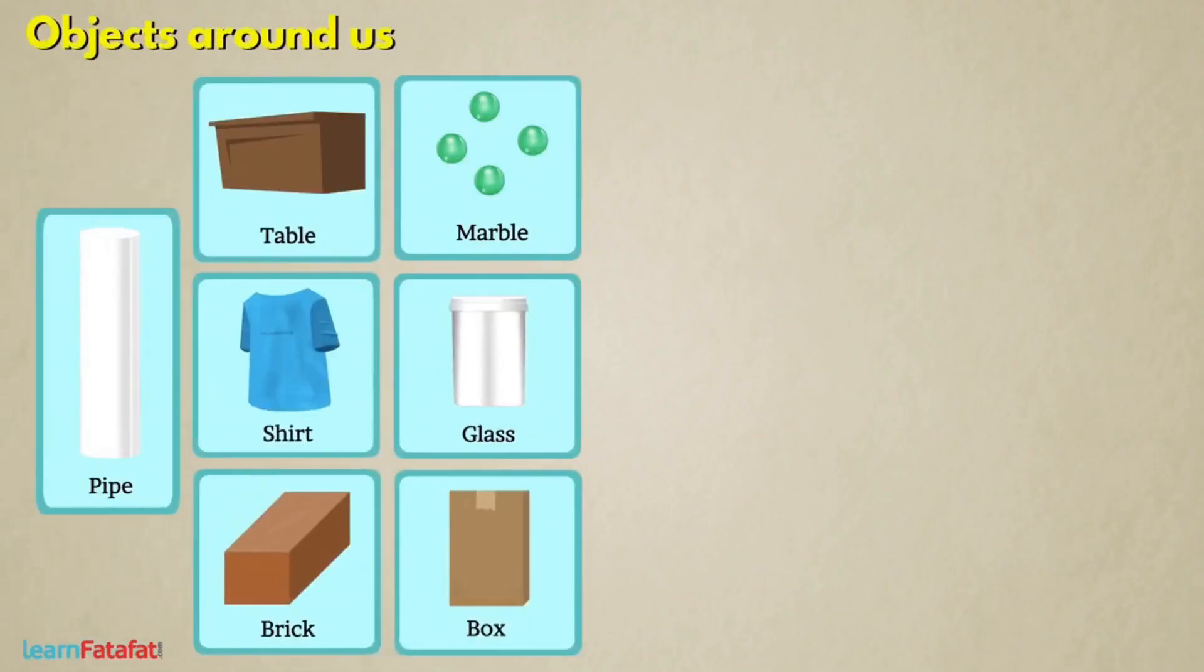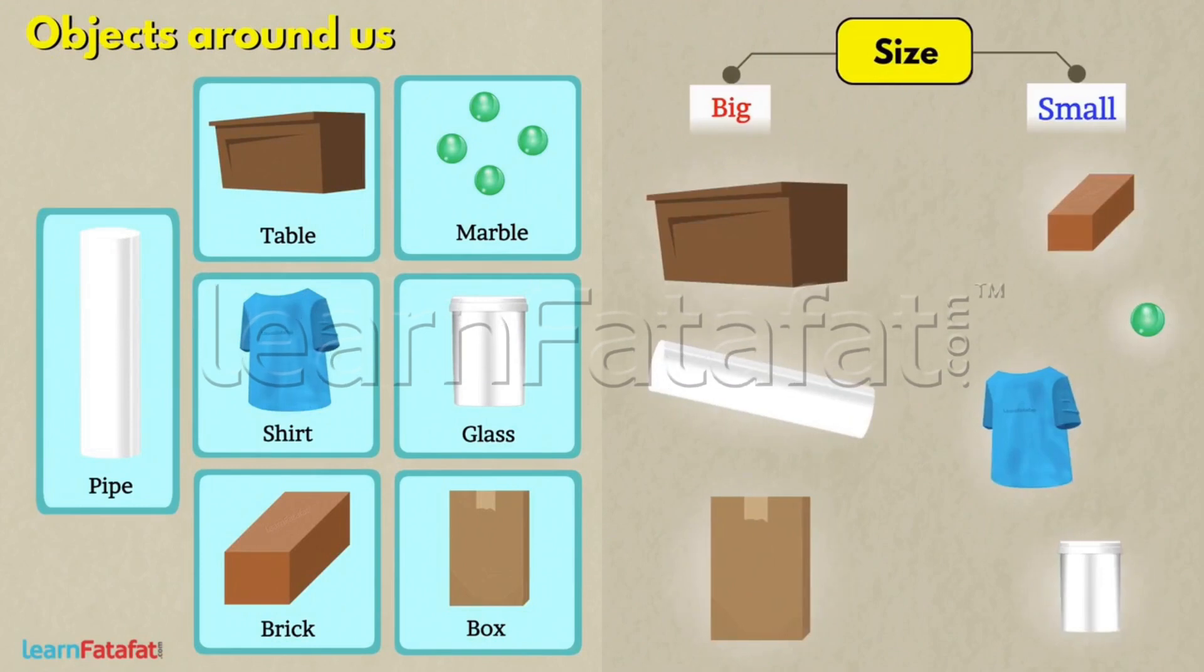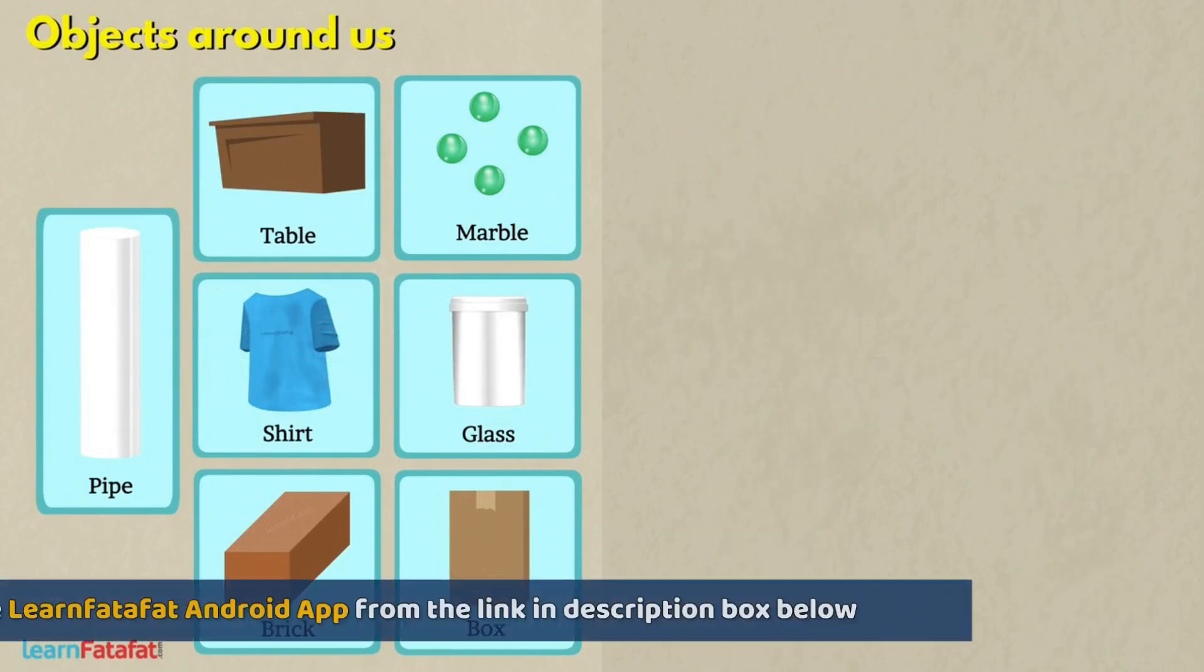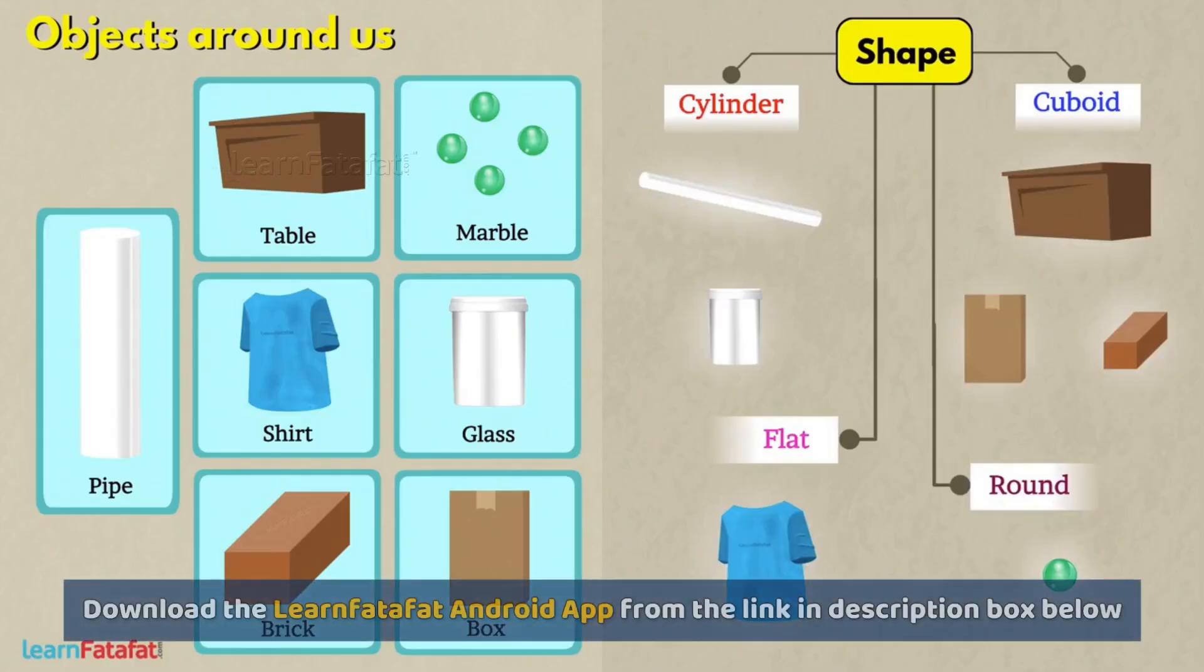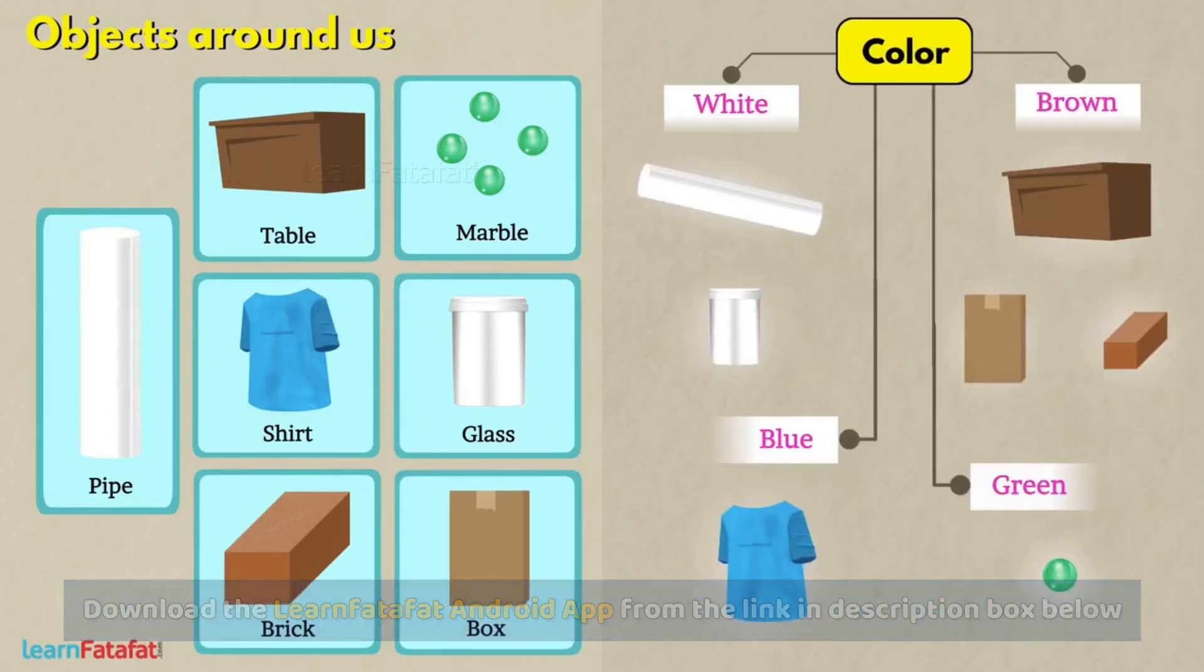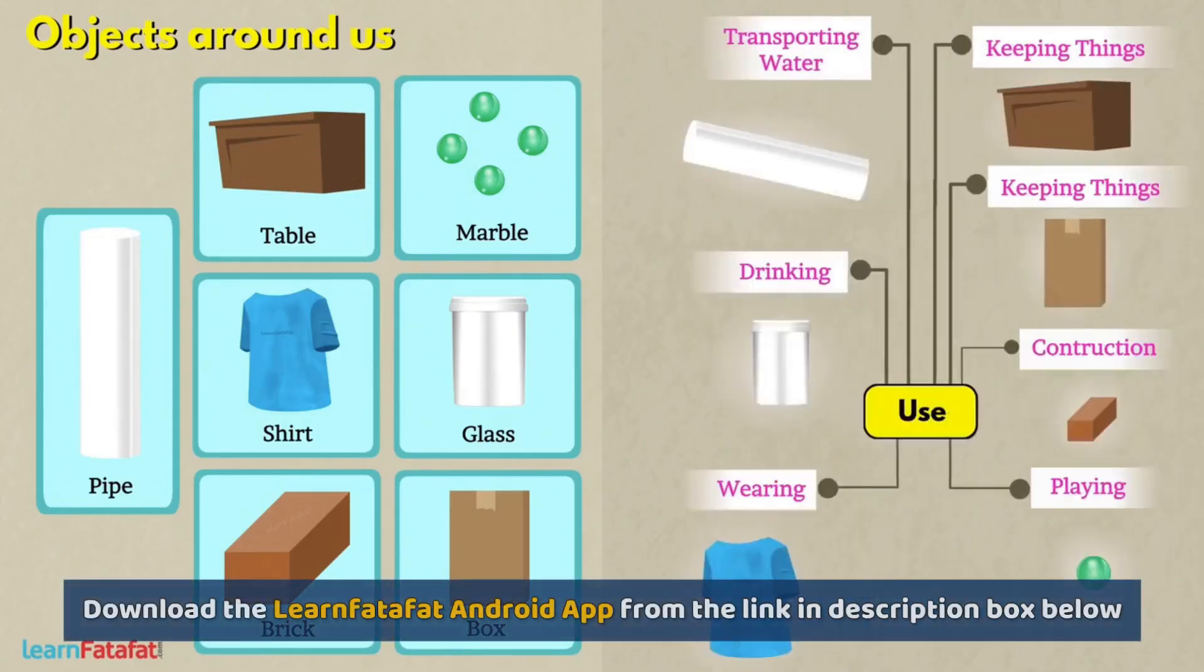There are various objects around us. They can be grouped in different ways based on properties such as size, shape, color, or their use.